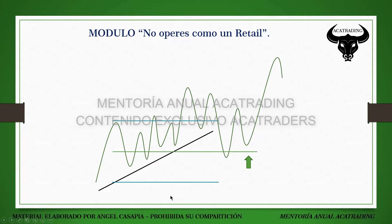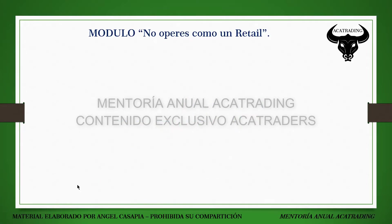La principal herramienta para anticipar reversiones son las divergencias, no en indicadores, sino las divergencias que encontramos entre activos correlacionados negativamente. Establecido entonces este preámbulo de introducción, vayamos a la siguiente figura chartista.